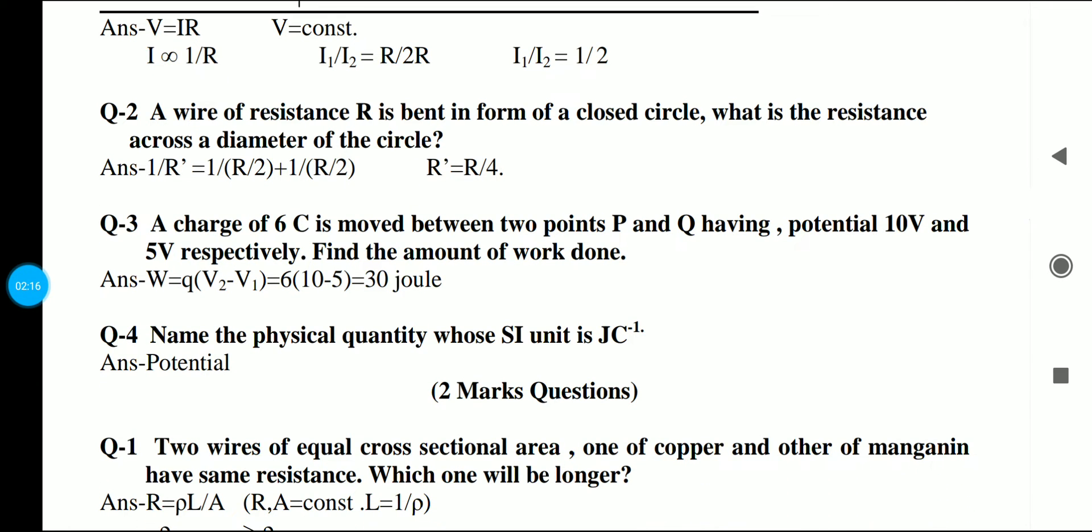Next, for numerical 1 mark, charge of 6 coulomb is moved between 2 points P and Q, having potential 10V and 5V respectively. Find the amount of work done. Work done formula is charge into potential difference. We have initial and final potential difference, so V2 minus V1 is 5. And 5 into charge 6 gives 30 Joules.